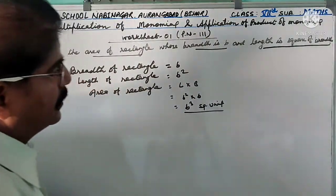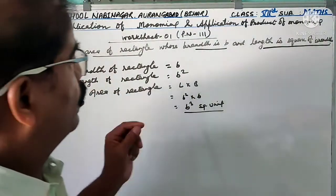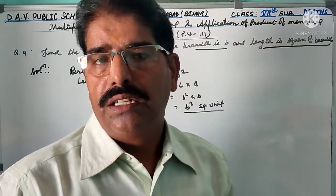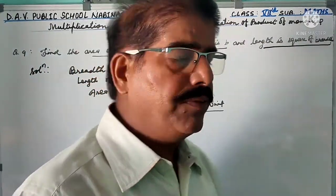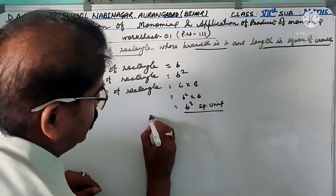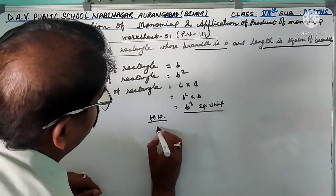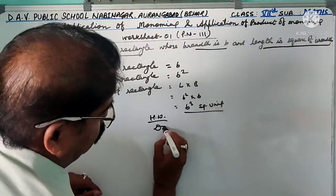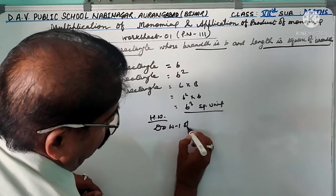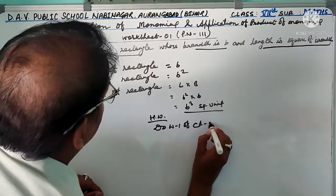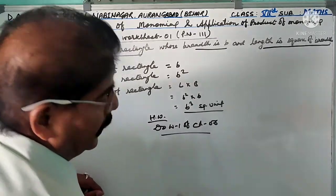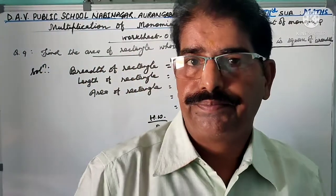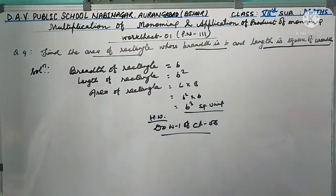We know that area of rectangle = length × breadth = b² × b = b³ square units. So the area of the rectangle is b³ square units. Worksheet one is now finished and today's class is also complete. Your homework is to do worksheet one. Thank you.